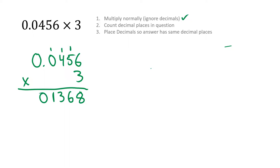Now we count the decimal places in the question. We had 1, 2, 3, 4 decimal places. So if we go back to our answer, it must have the same number of decimal places: 4. Starting at the very back, I go 1, 2, 3, 4. That's where my decimal goes. So our final answer is 0.1368.